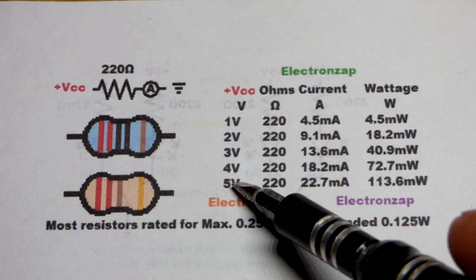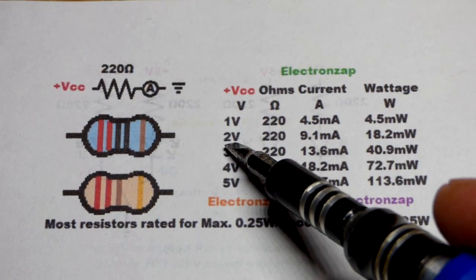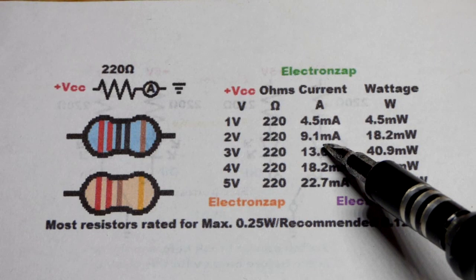Whereas with the blue LED, they drop about 3 volts. So down to about 2 volts across the resistor. 9.1 milliamps of current.